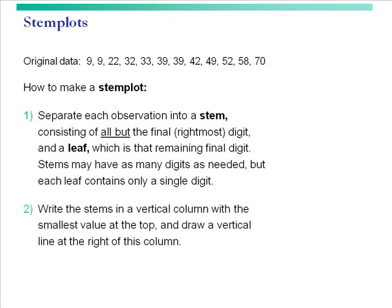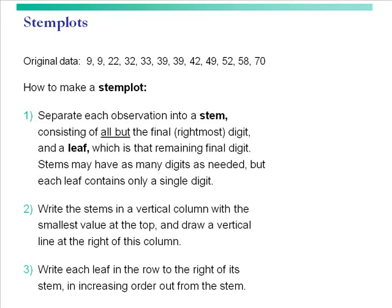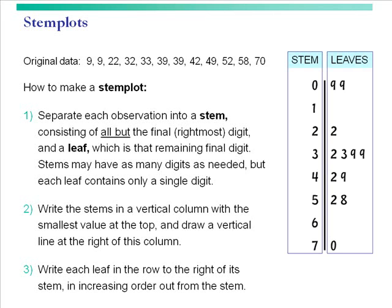You write the stems in a vertical column with the smallest value at the top, and draw a vertical line at the right of this column. Then you're going to write each leaf in the row to the right of the stem in increasing order out from the stem.